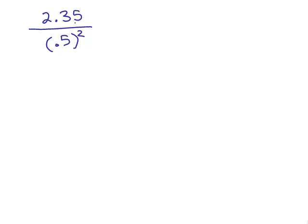Let's simplify this next problem. We have 2.35 divided by 0.5 squared. The numerator is already simplified, but we have to do 0.5 squared.